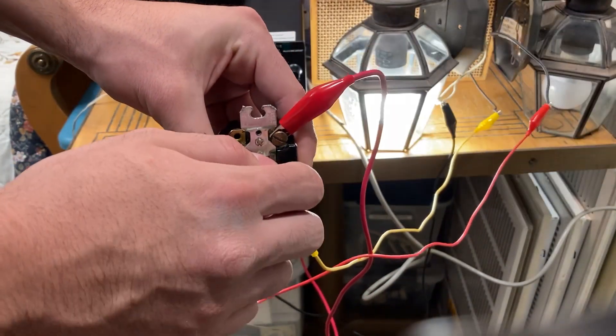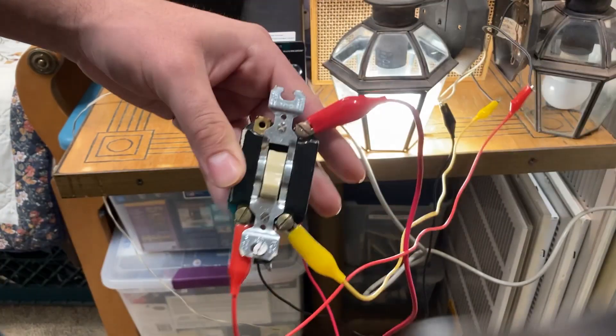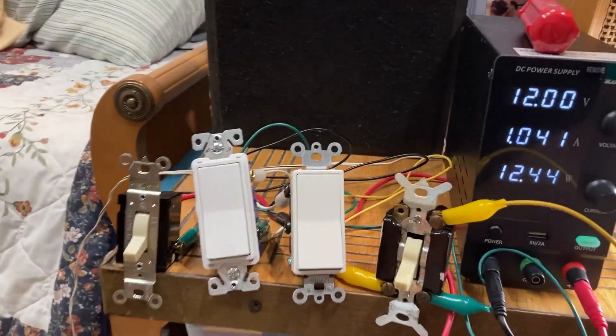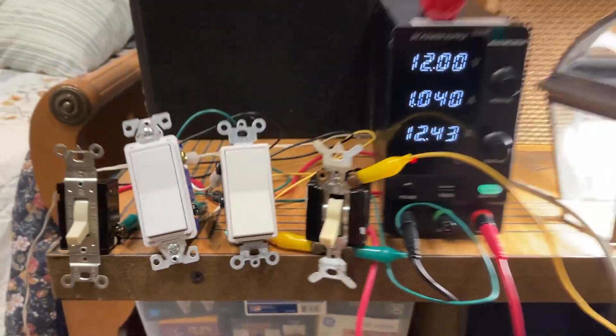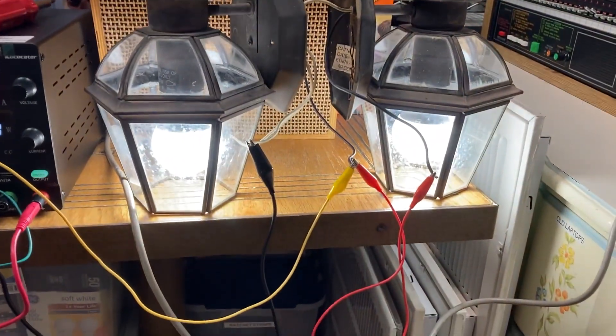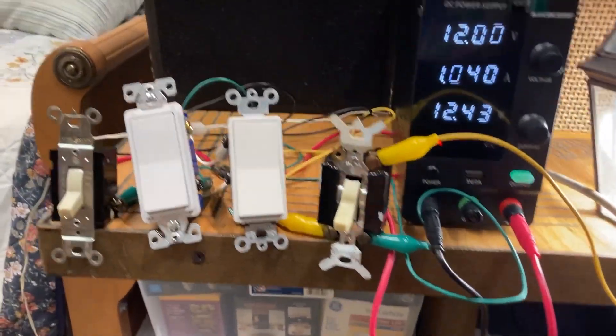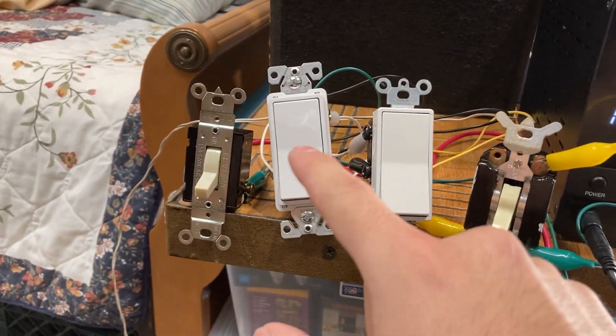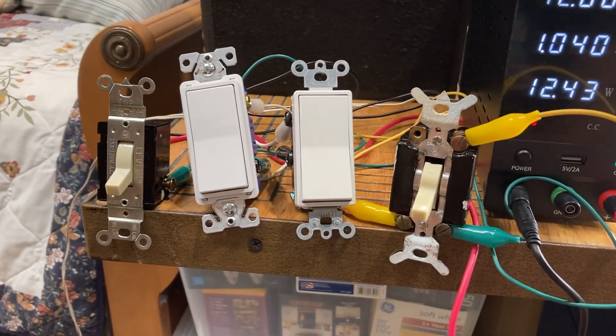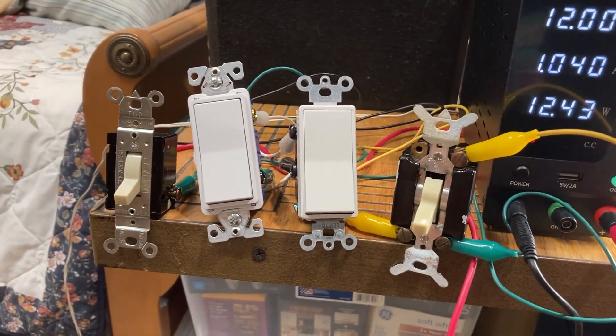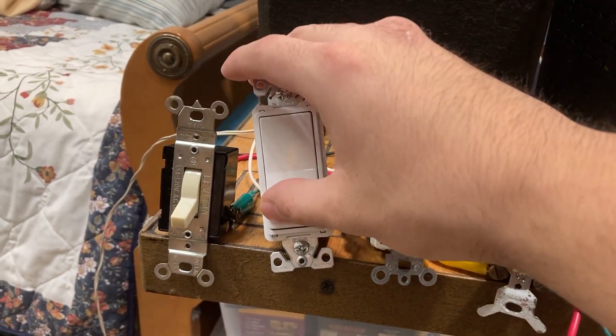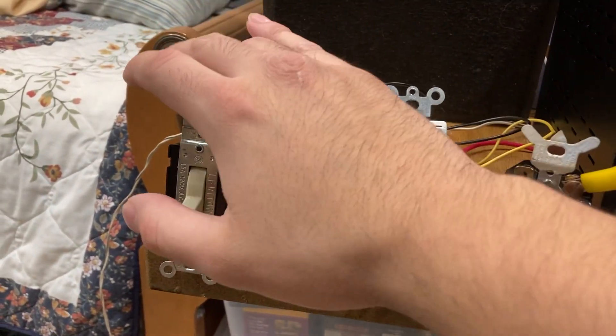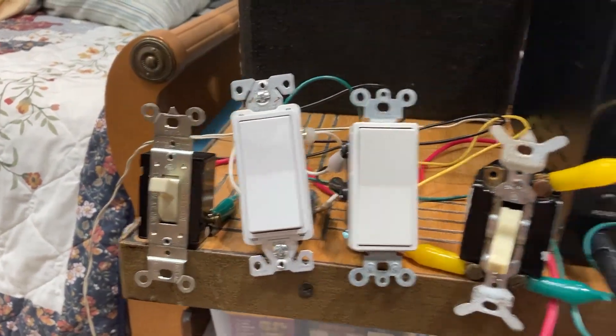I decided to wire in two four-way switches in between the two mercury switches. So now I should be able to control these two lights from four different locations. Now this one's a modern day Eaton switch you could get at Lowe's. This one's just a Leviton four-way switch. So there's that and then I could control the lights from here. Probably it might help if I do that.